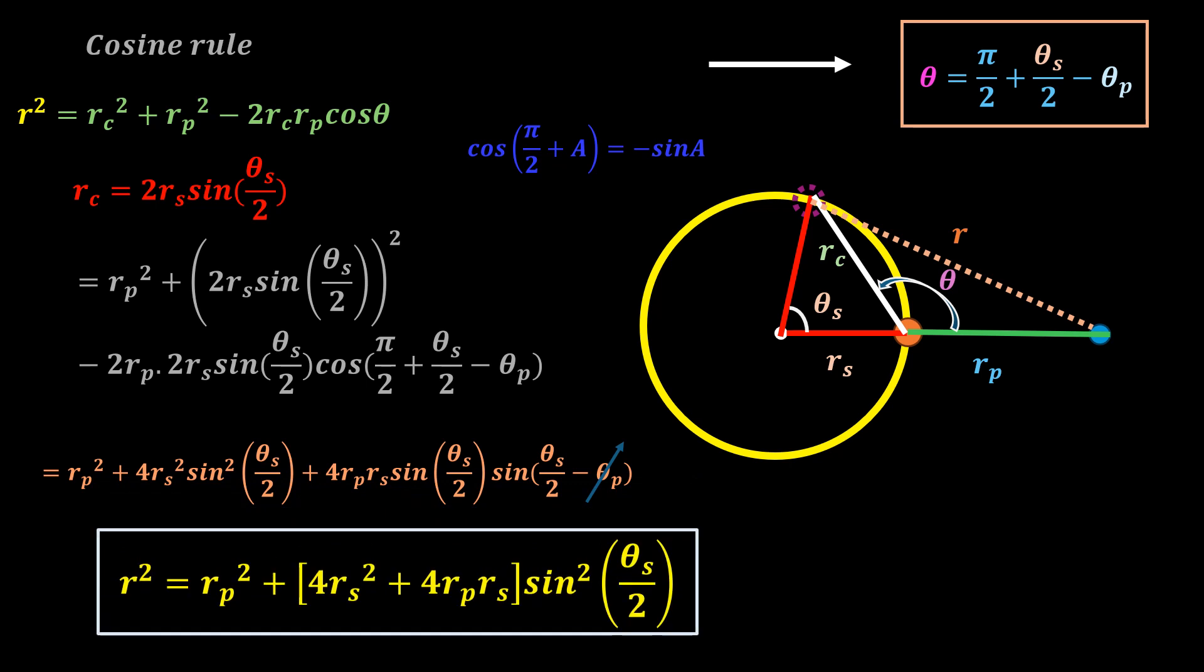For any two planets, we have to use the previous equation because theta p would then be significant.